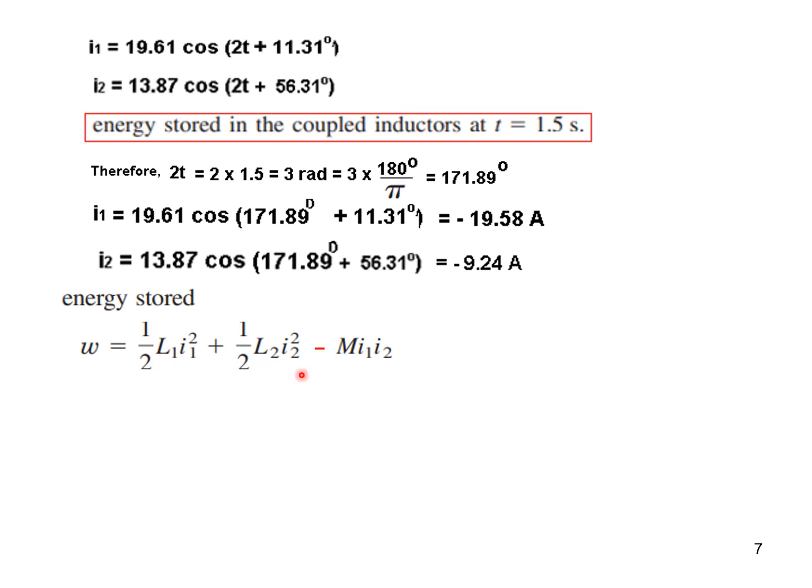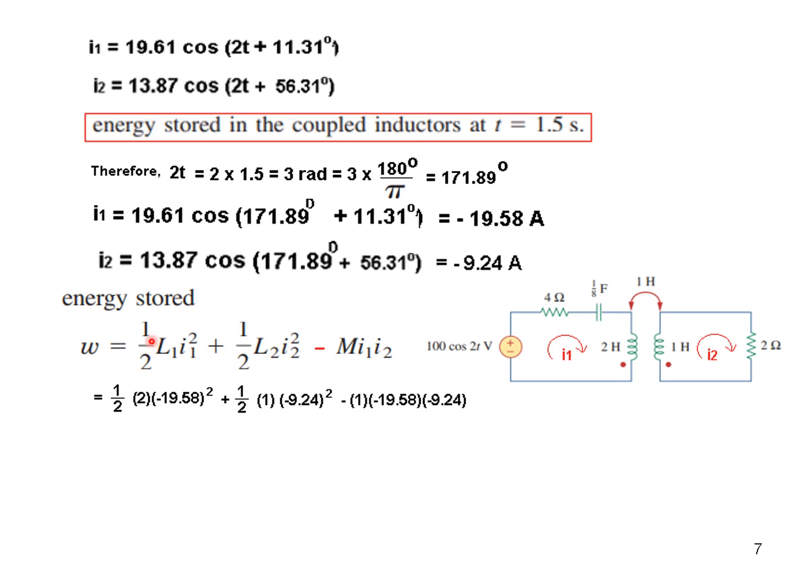And now we are ready to use the energy stored equation. Now here we are taking minus sign because, as I have already discussed, we can look here: the current is entering the non-dotted terminal here, but here the current is entering the dotted terminal. So there is a mismatch, and whenever there is a mismatch, we use negative sign here. And now we can plug in all the values. So this is 1 over 2, L is 2, current we have found from here. So putting all the values, M is 1 from here and the two currents, and solving, our energy is 245.15 joules.